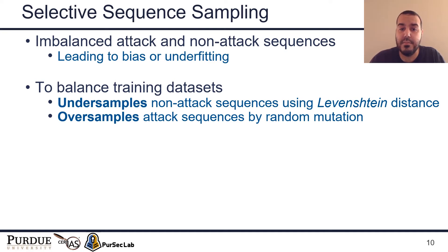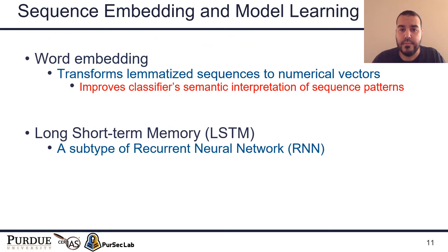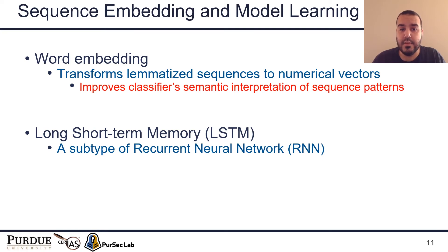After balancing, ATLAS passes the sequences to sequence embedding and model learning. The sequence embedding component uses word embedding to represent vocabularies as numerical vectors instead of indexed words, allowing the learning model to learn semantic relationships between vocabularies. Next, ATLAS passes the sequences to the LSTM training model. The LSTM neural network architecture is widely applied and proven effective for sequence-based learning tasks such as machine translation and sentiment analysis. The LSTM enables ATLAS to automatically learn and differentiate patterns in attack and non-attack sequences.